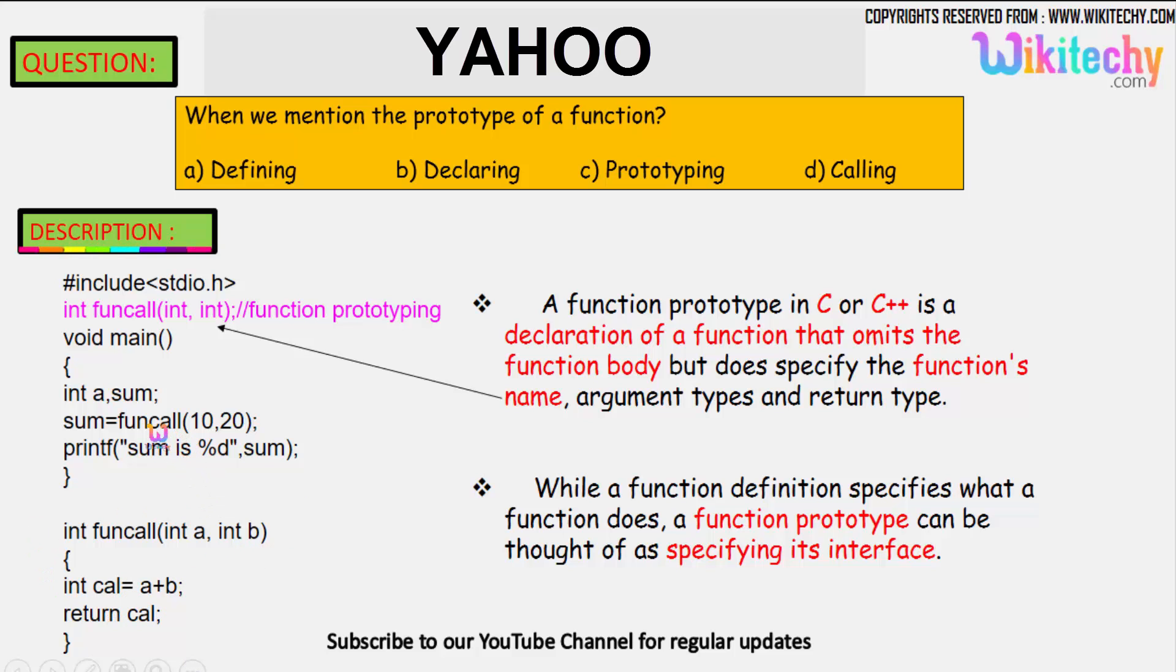So this is called in the main function. The function call is a function which is called in the main function. A function prototype in C or C++ is the declaration of a function that omits the function body but specifies the arguments and its return types.